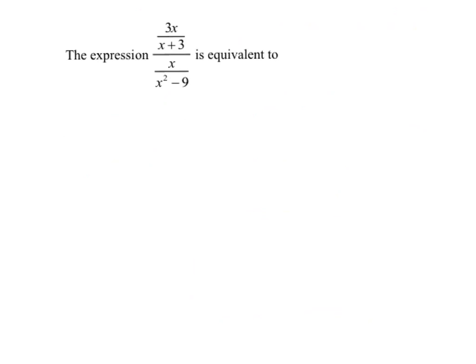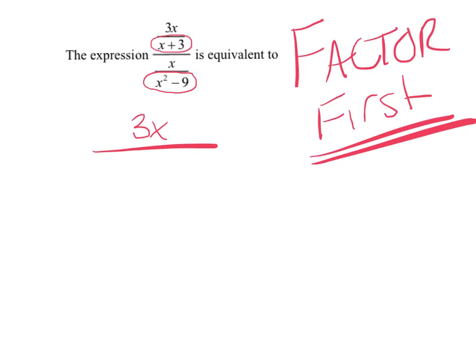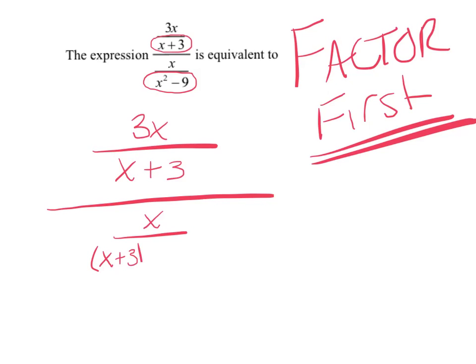We've done the nicer looking ones — they're going to start looking a little uglier. In some cases you might have to factor first, before you get the common denominator, and it should be obvious. If one of these denominators looks ugly, then factor first. I have 3x over x plus 3, all over x over — how can you factor x squared minus 9? Difference of two squares: x plus 3 and x minus 3.